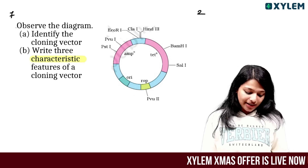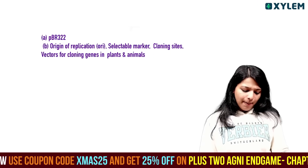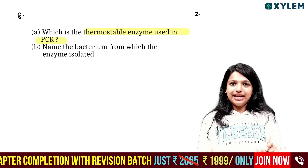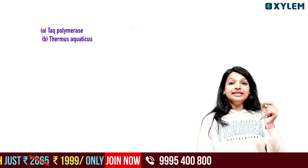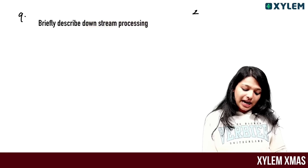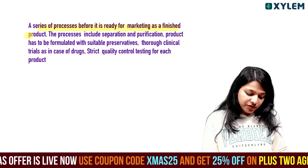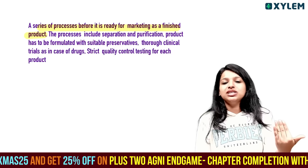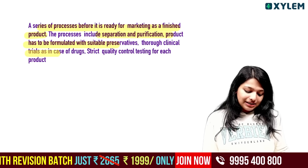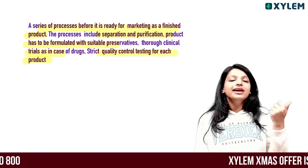Observe the diagram and identify the cloning vector pBR322. Three characteristic features of a cloning vector: origin of replication, selectable marker, and cloning sites. The thermostable enzyme used in PCR is Taq polymerase. The bacterium from which this enzyme is isolated is Thermus aquaticus. The downstream process is a series of processes before the product is ready for marketing as a finished product. It includes separation, purification, and the product has to be formulated with suitable preservatives.